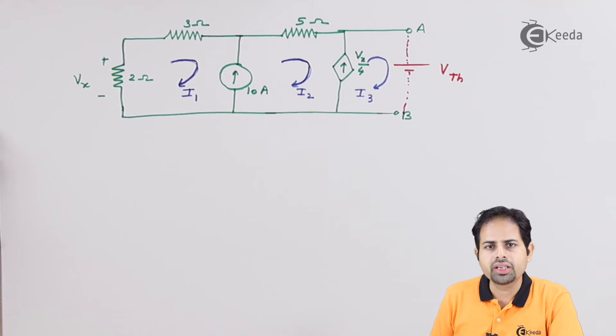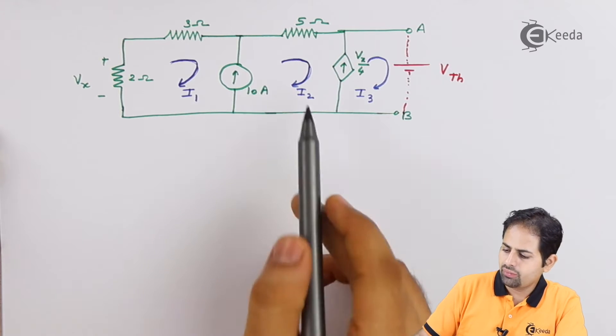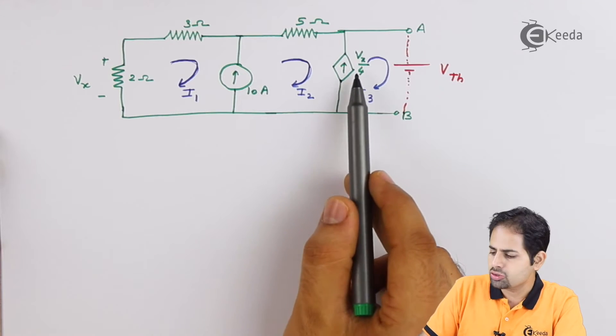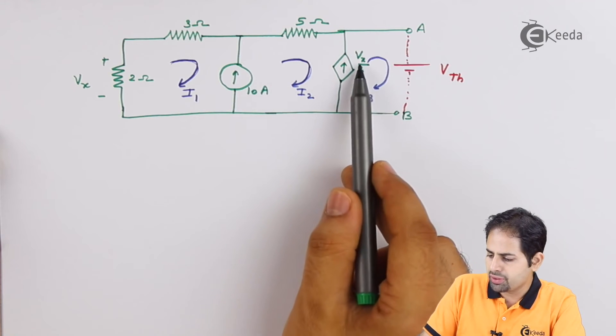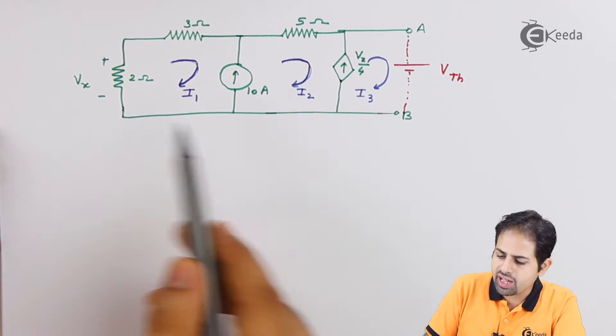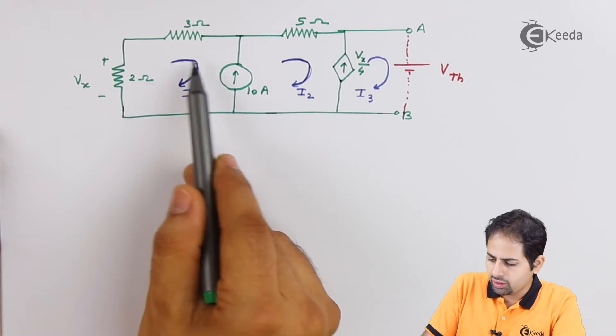Now you can see there is one current source here and one more current source which is dependent current source here also, which depends on value of Vx. It is Vx divided by 4. So where is this Vx? Vx can be found here.